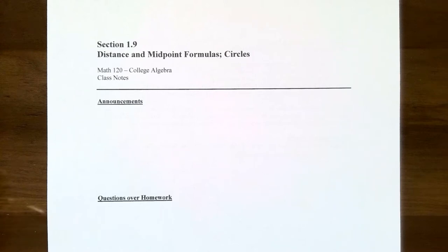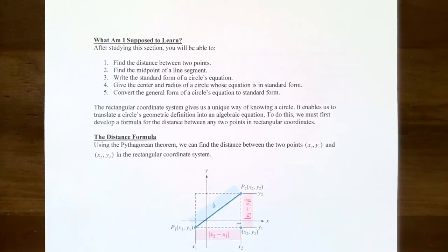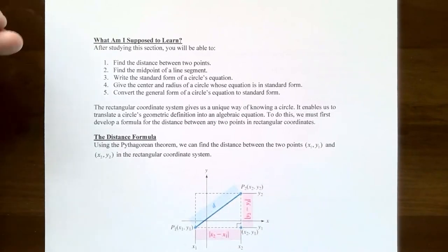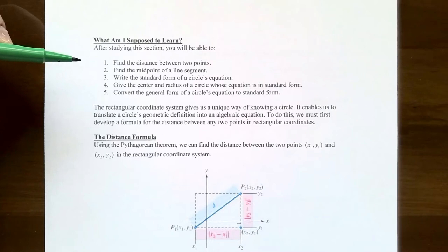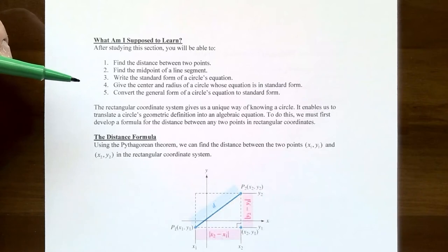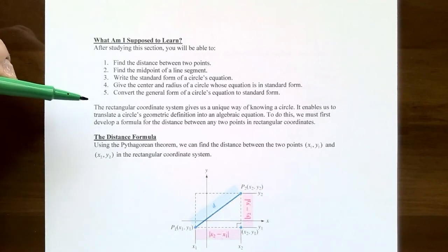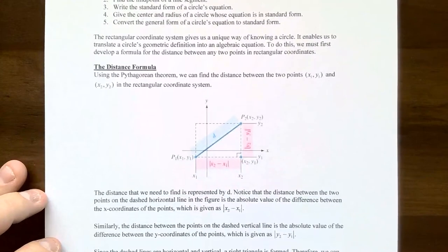Hey everyone, it's Professor Primfton. In this video we're going to talk about the distance and midpoint formulas — how to find the distance between two points in the rectangular coordinate system, and how to find the midpoint of a line segment between two points in the Cartesian or rectangular coordinate system. In the next video we'll talk about equations of circles. So let's start off with the distance formula.